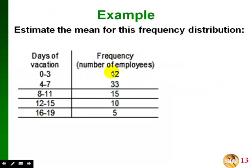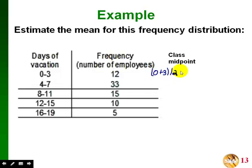Here's an example with a frequency distribution. Our first step is to find the class midpoints. To find a class midpoint, we take the lower and upper class limits and average them. So for the first class, we take zero plus three divided by two, giving us 1.5. For the second class, four plus seven divided by two gives us 5.5. The class width is four, so we can just add four to each midpoint to get the rest.